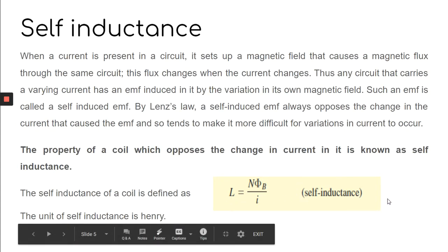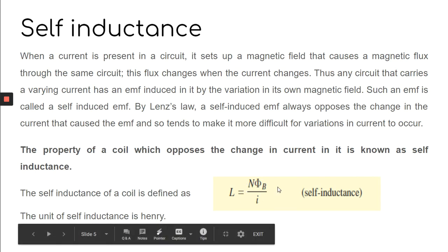Inductance or self-inductance is defined as L = NΦB / I, where N is the number of turns of the coil, ΦB is the magnetic flux linked with the coil, and I is the current. It is a constant quantity for a particular coil because if you increase I, ΦB increases proportionally. The unit of inductance in terms of Weber and Ampere gives us the Henry — generally the unit of inductance is Henry.